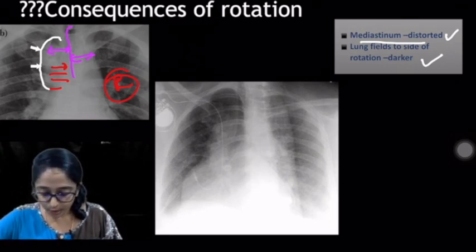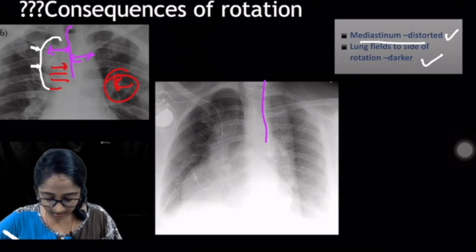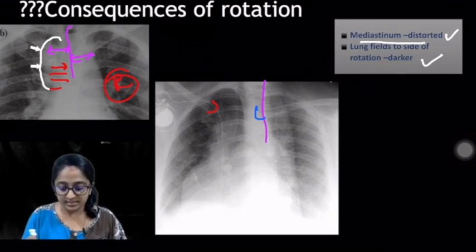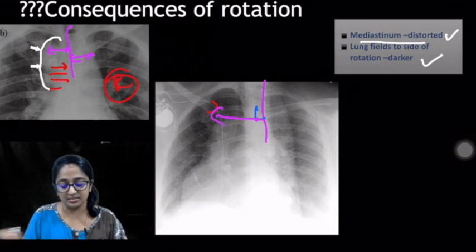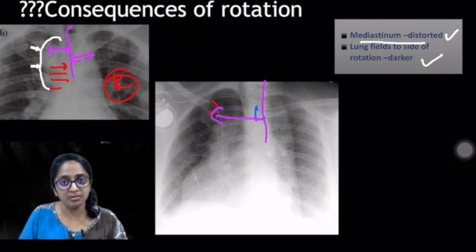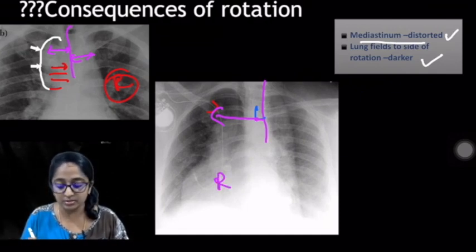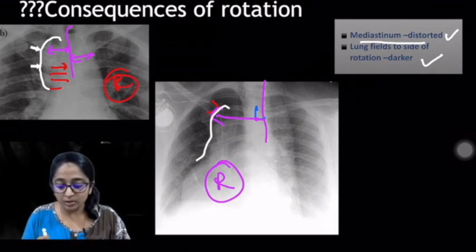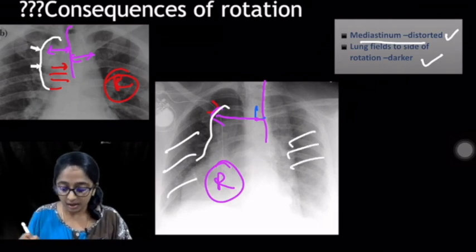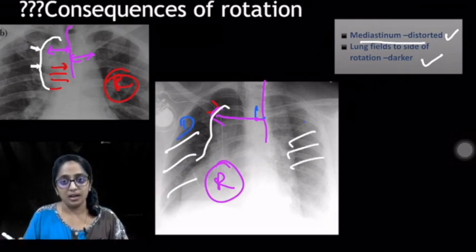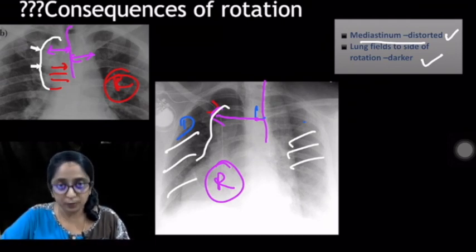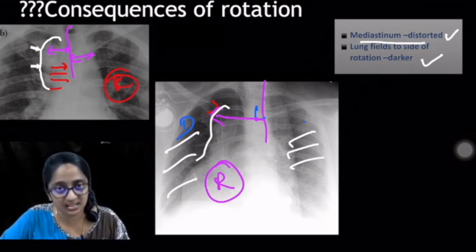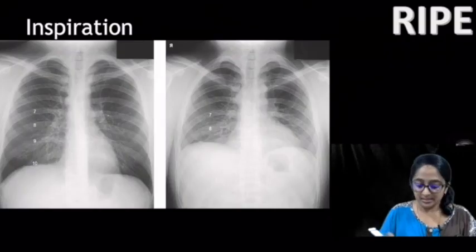In the next image, the spinous process and medial ends of the clavicles show the right clavicle is further from the spinous process — so the radiograph is rotated to the right. Other than the distorted mediastinum, you can see the right-sided lung fields appear darker than the left. So with rotation, mediastinal structures on that side appear distorted and magnified, while the lung fields on that side become darker.